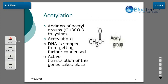The first modification I will discuss is acetylation, which is the addition of an acetyl group to the histone proteins. When there is increased acetylation, the DNA is stopped from further getting condensed, and as a result active transcription of genes takes place.